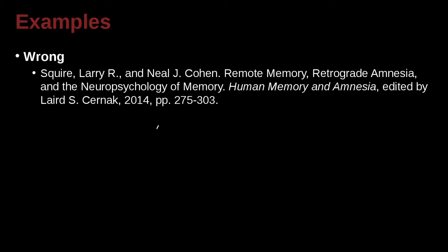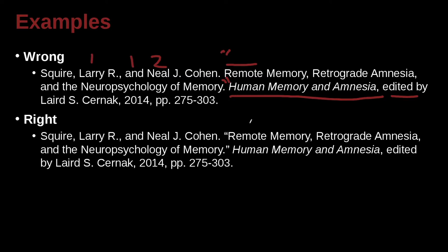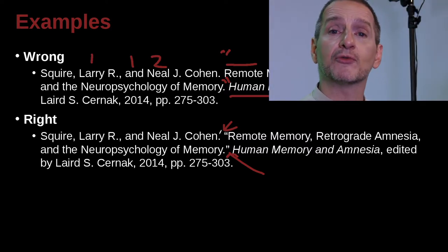Squire, Larry R., and Neil J. Cohn — first author and second author, written with 'and' between them, two authors so we write them both out. The article title 'Rumo, Memory, Retrograde Amnesia, and Neuropsychology of Memory' is something smaller inside a container. Human Memory and Amnesia looks like a journal title but it's actually a book edited by someone. A piece smaller inside a container needs to be inside quotation marks, and the correct way is to write 'edited by' for the book's editors.